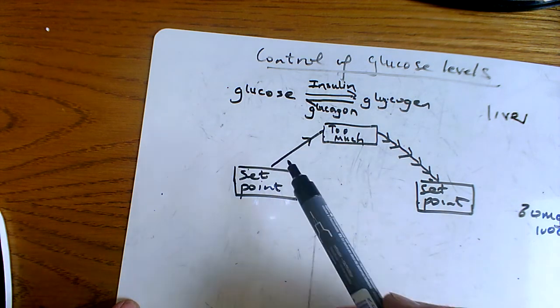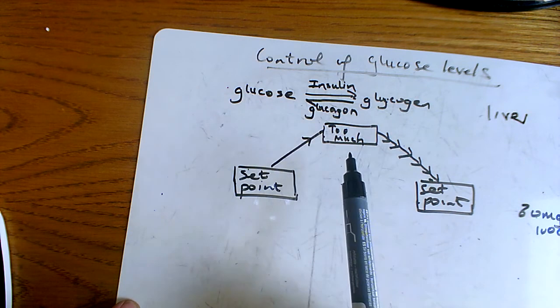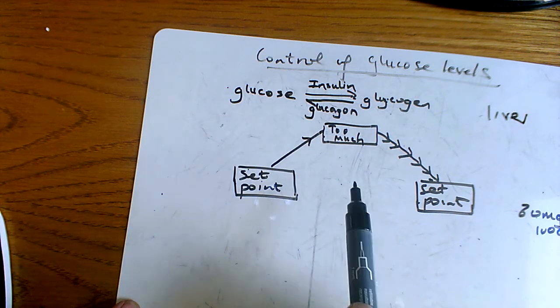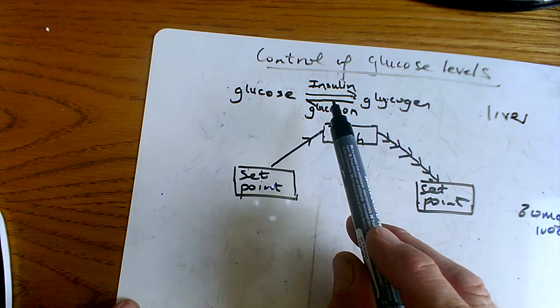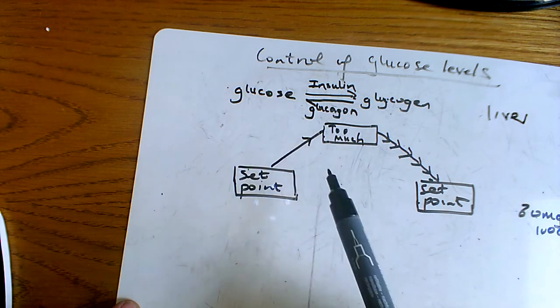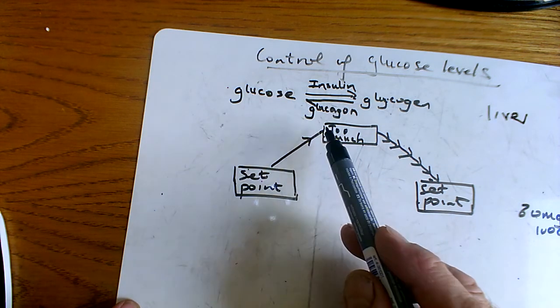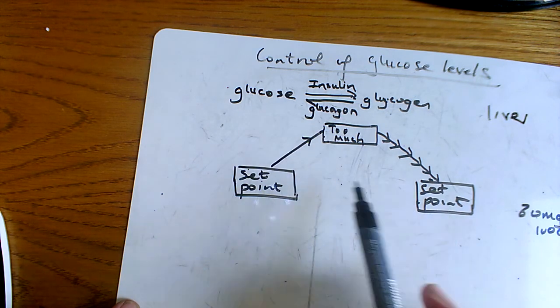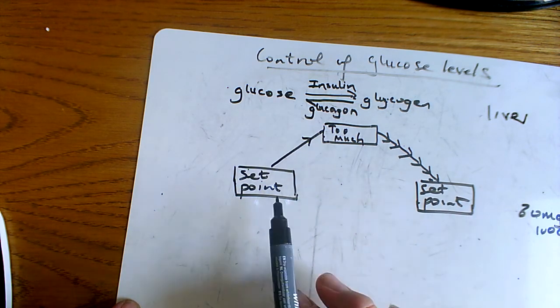In this case it's an increase, and negative feedback reverses that trend. So by producing insulin, your body reverses the trend of having too much glucose, brings it back down to the set point, which is also called the homeostatic level.